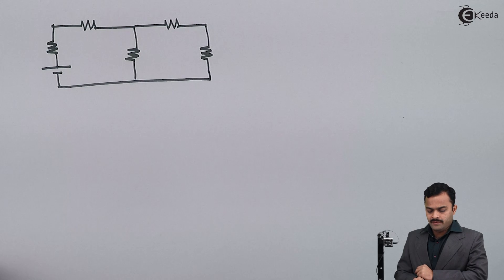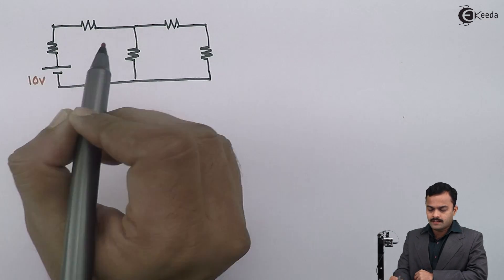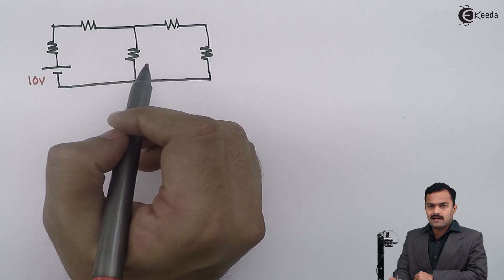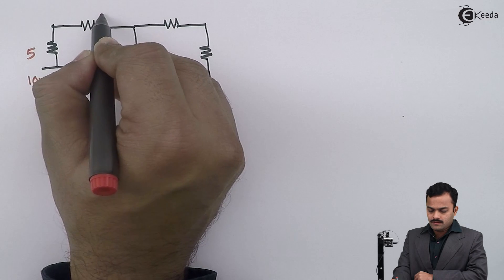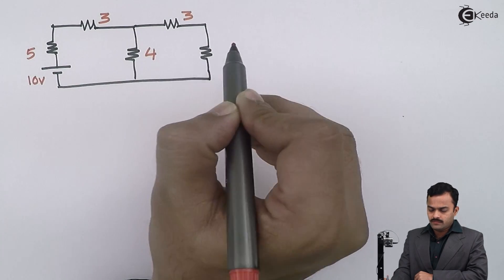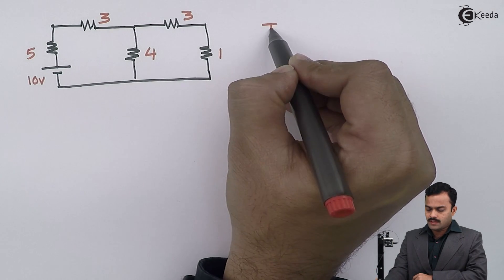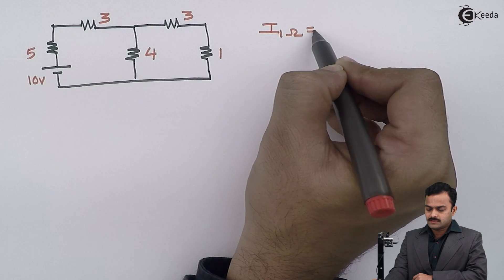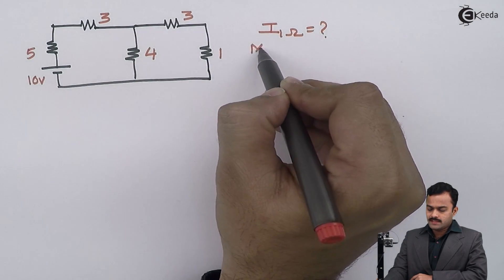In this circuit I'm having a battery of 10 volt and number of resistances are connected. I will have the value 5 ohm, this is 3 ohm, this is also 3 ohm, 4 ohm and 1 ohm. The objective is to find out current flowing through 1 ohm resistance using mesh analysis technique.